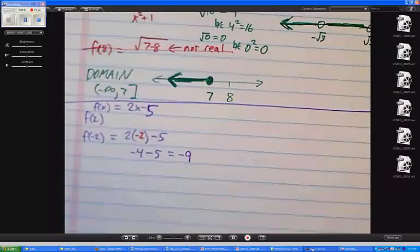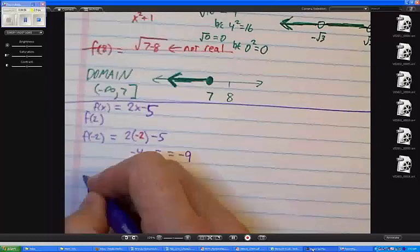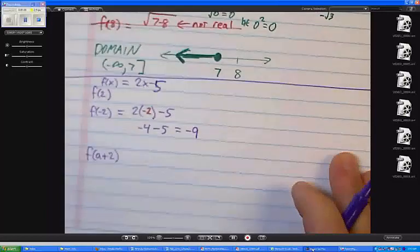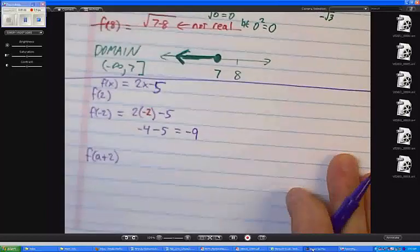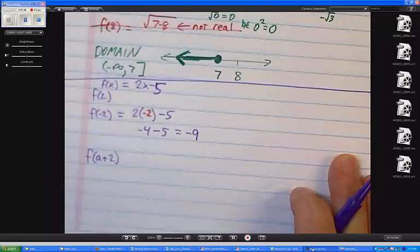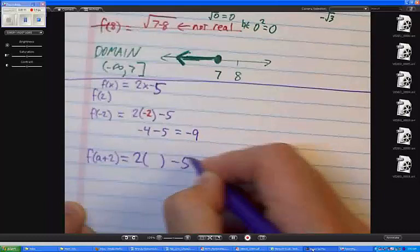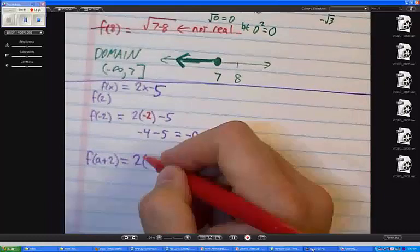But what I wanted to talk about more was when you have something like f of a plus 2. Well, that seems foreign to us right now, but it's something we're going to have to get familiar with. And the rule is the same. Everywhere that it says x, what do I write? a plus 2.